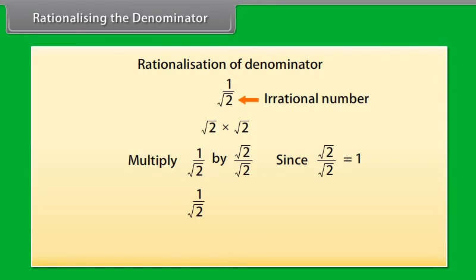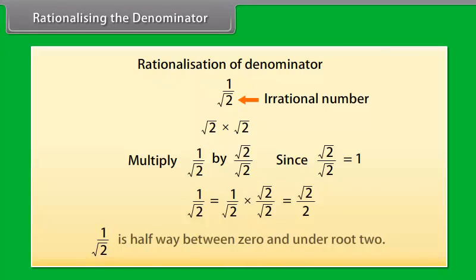Therefore, 1/√2 equals √2/2. Now it is easy to locate 1/√2 on a number line - it is halfway between 0 and √2.